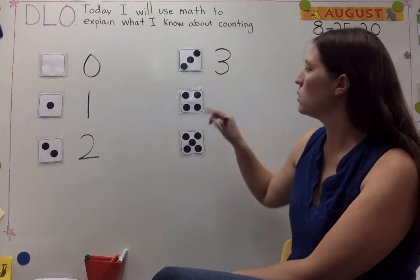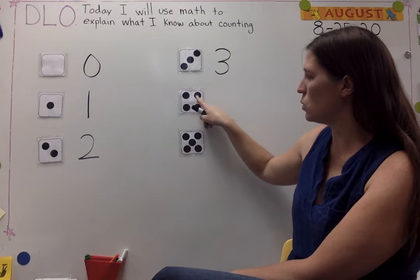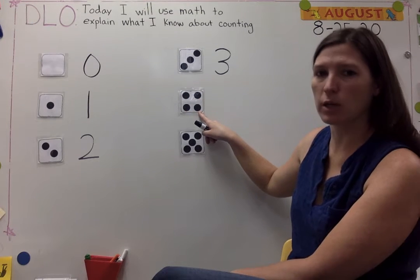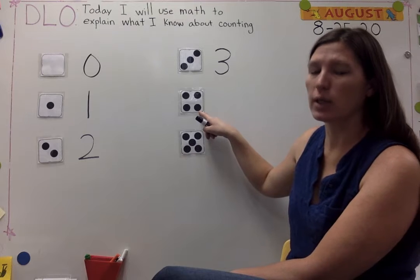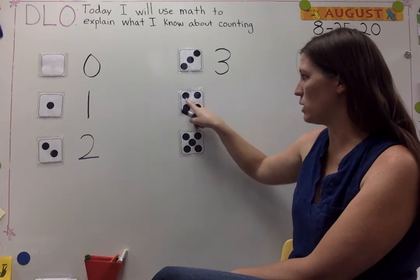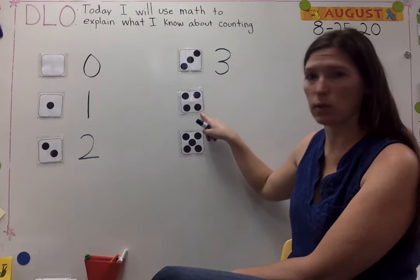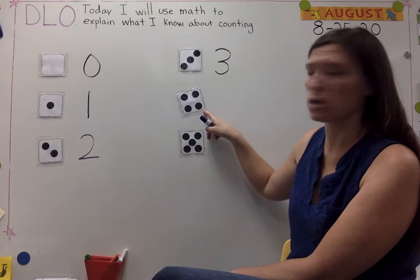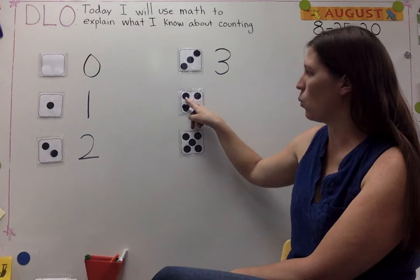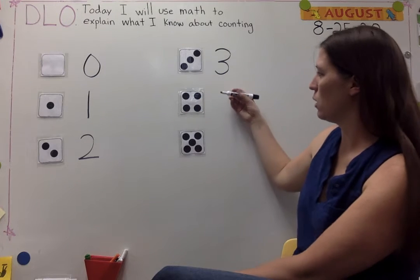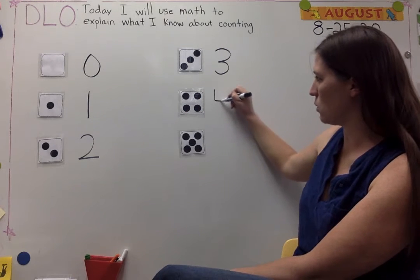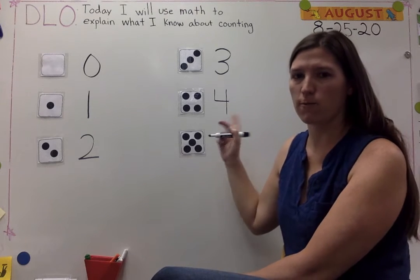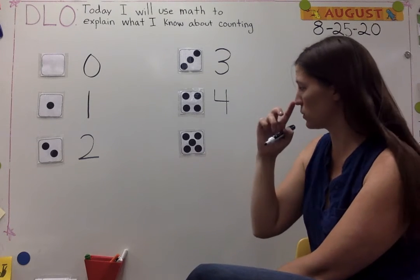Let's go to the next one. Let's count the dots. One, two, three, four. How many dots are there? Four. How do I know? Because I pointed to each dot and I counted them, and the last one I counted was the amount of dots on the piece of paper. Four is down, over, down some more — that's the way you make a four.